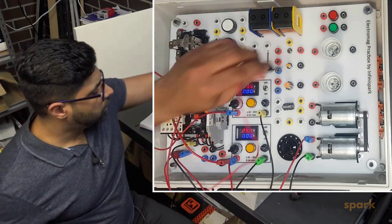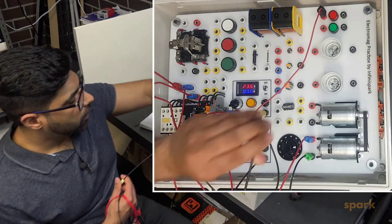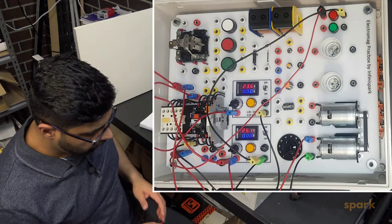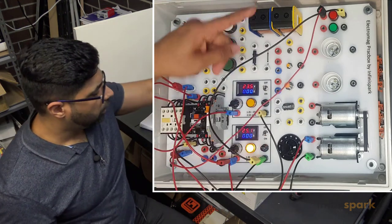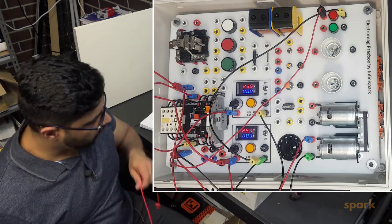Line two, or T2, goes to the red LED. The negative of the red LED goes to the negative circuit. Let's turn that on. Nothing happens because the contactor is de-energized.